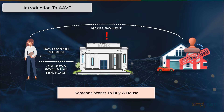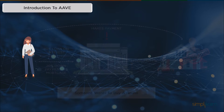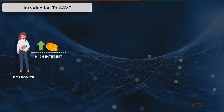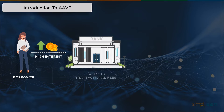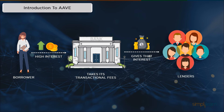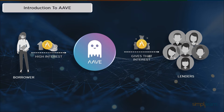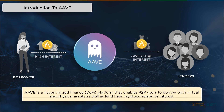What exactly happens is the bank lends you money knowing that you will pay high interest on it. And then the banks give that interest to its lenders, of course, after having their profiting charges. Well, Aave is a cryptocurrency version of that bank.